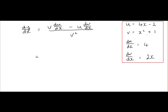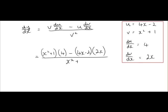So it's v du/dx, so v is x² plus 1, and multiply by du/dx, which is 4. Put in our minus u, which is 4x minus 2, put our brackets around it, by dv/dx, which is 2x. And that's all over v², which is x² plus 1, all to be squared.